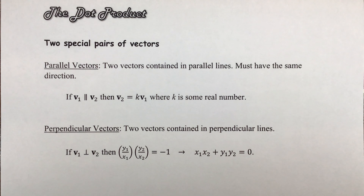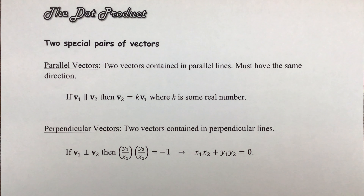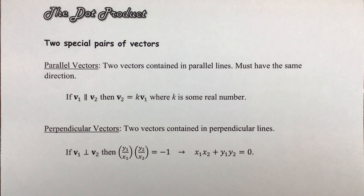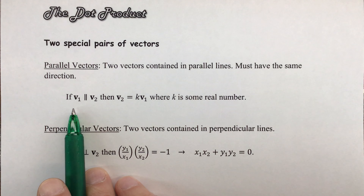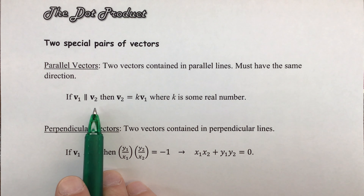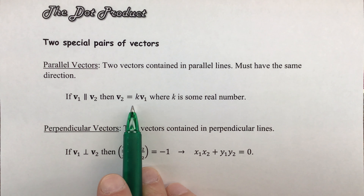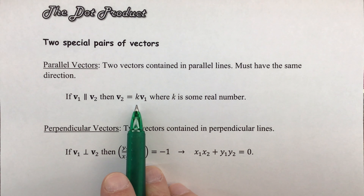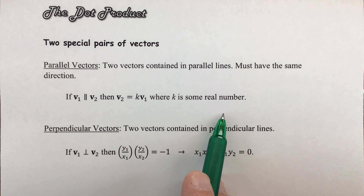We're going to start by talking about parallel vectors. Parallel vectors are vectors that would be contained in parallel lines. Just imagine on the coordinate grid that you have a couple of parallel lines. If those vectors sit on top of the parallel lines, those vectors would be parallel to each other. So we're going to begin with this prompt: if vector one is parallel to vector two, then vector two is going to be equal to k times vector one, where k is some real number.